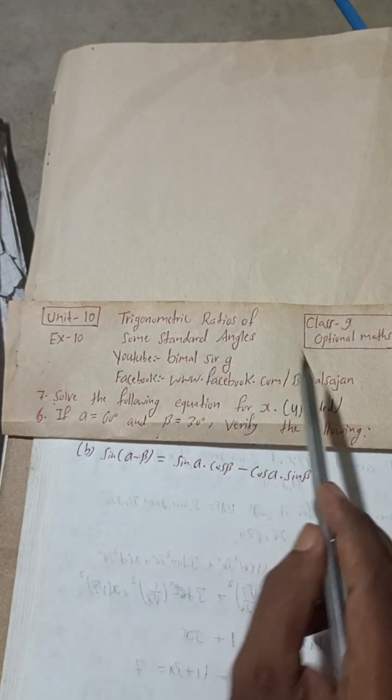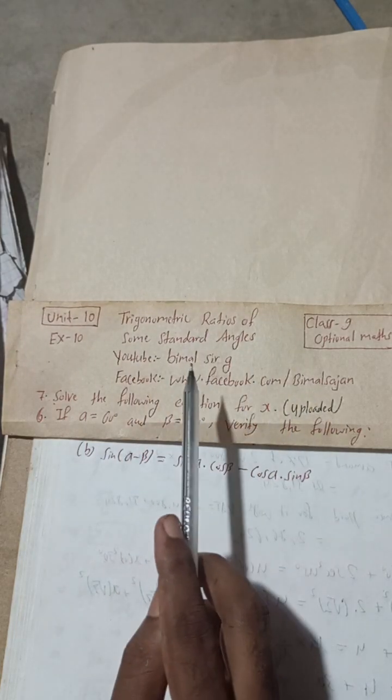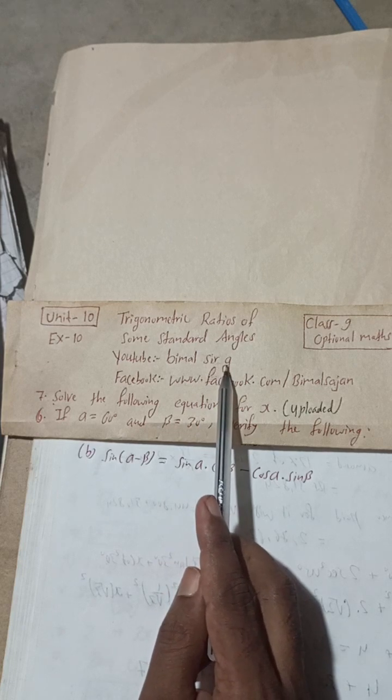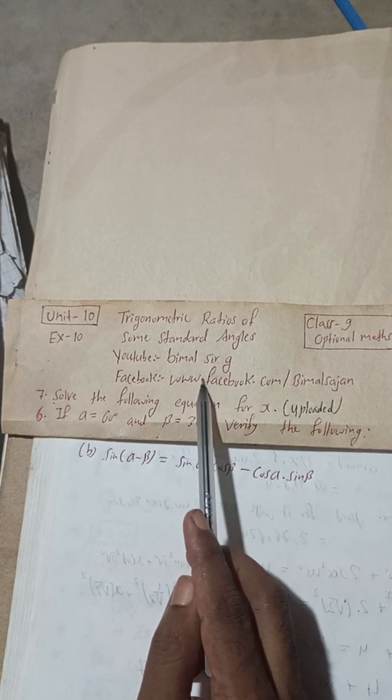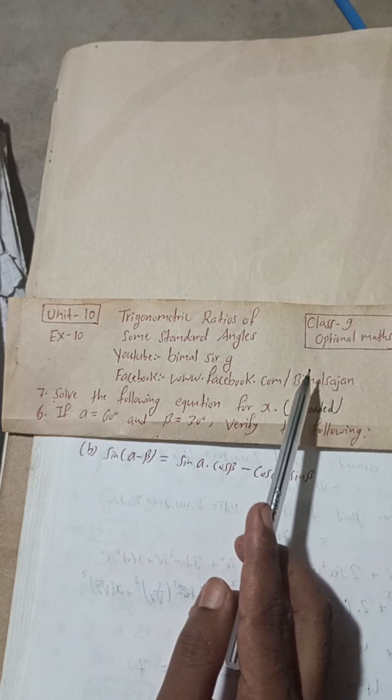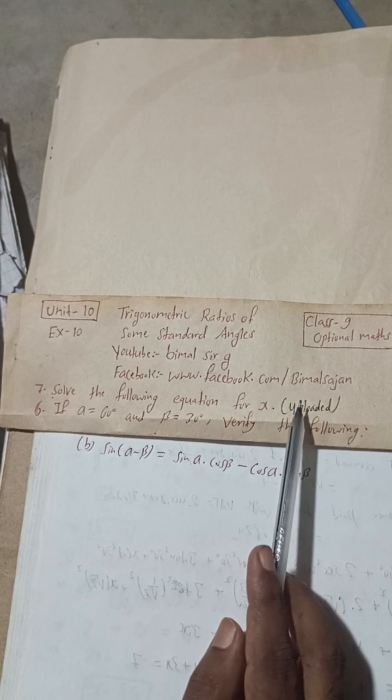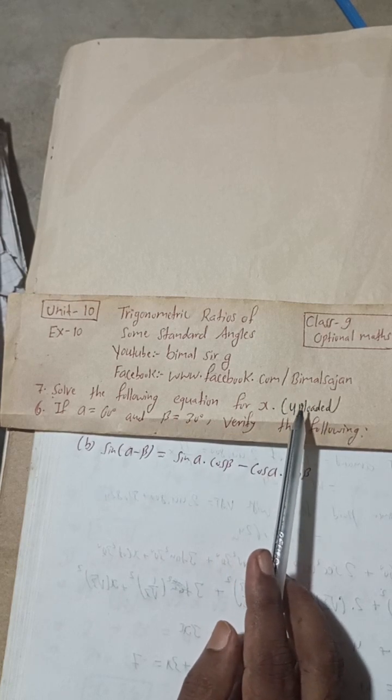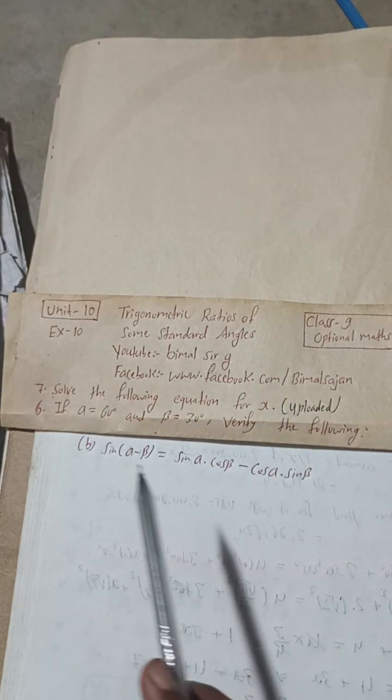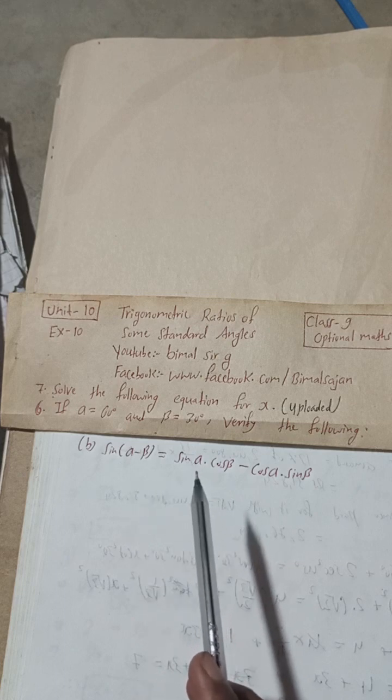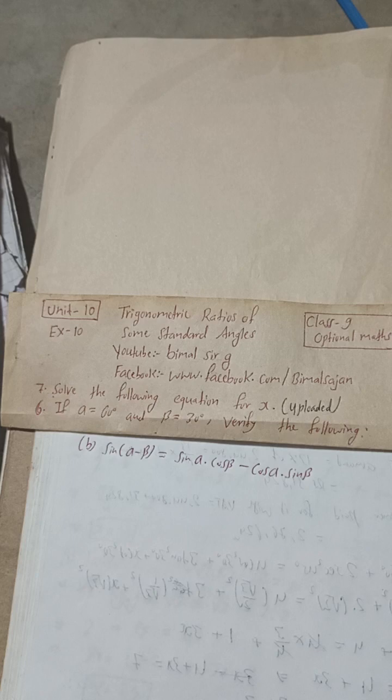If you type www.facebook.com/b-i-m-i-l-s-a-j-i-n, then you will get my Facebook ID. If you follow me in this Facebook ID, then you will get most of the shortcut tricks for science, maths, and many more subjects which will be very helpful for you to secure good marks in your SEE examination.